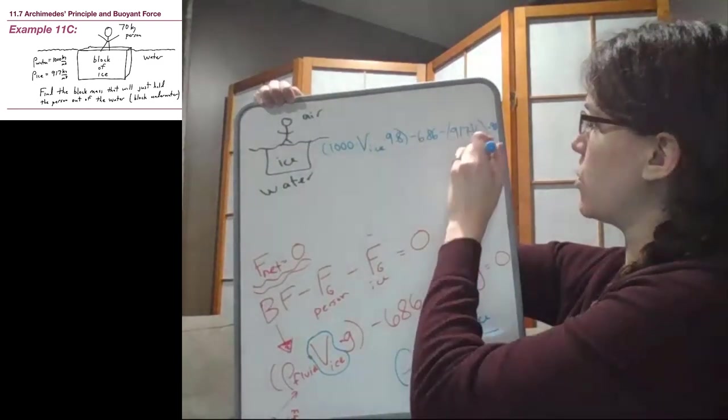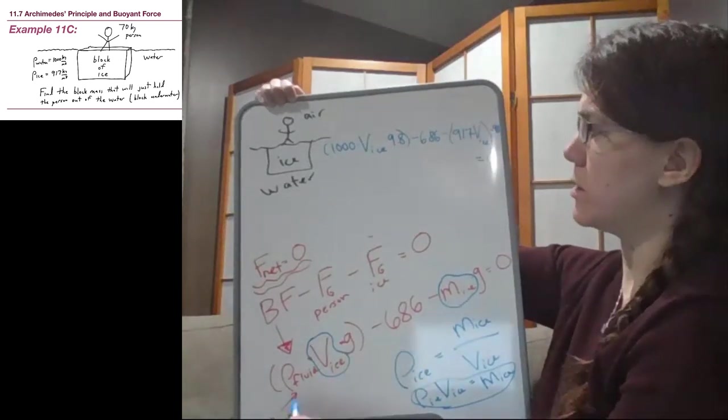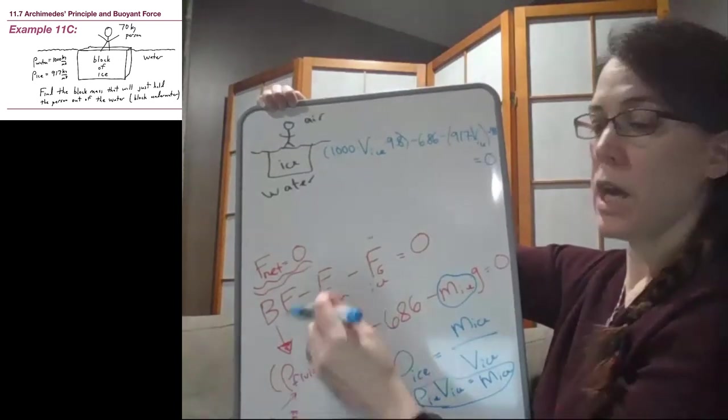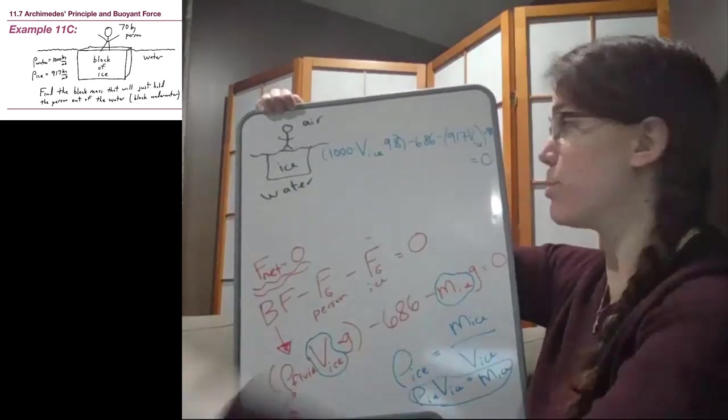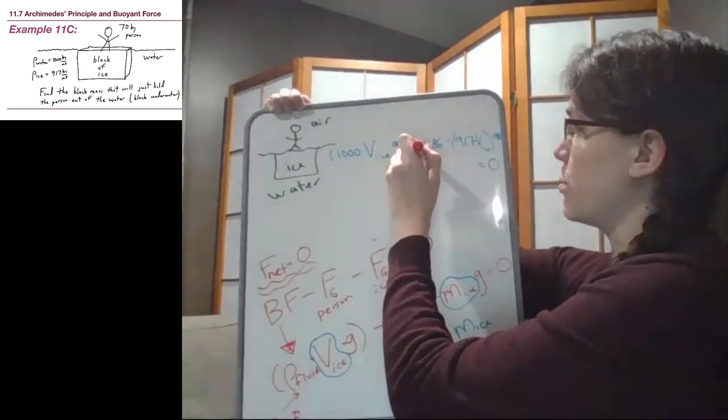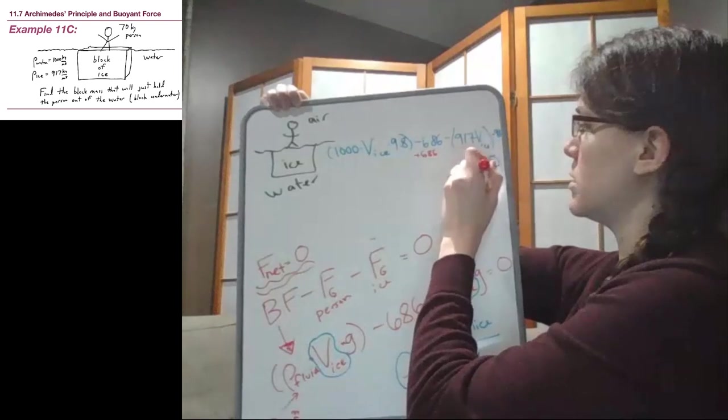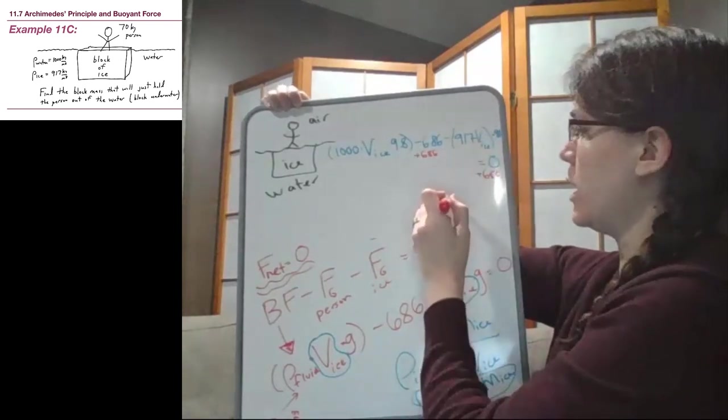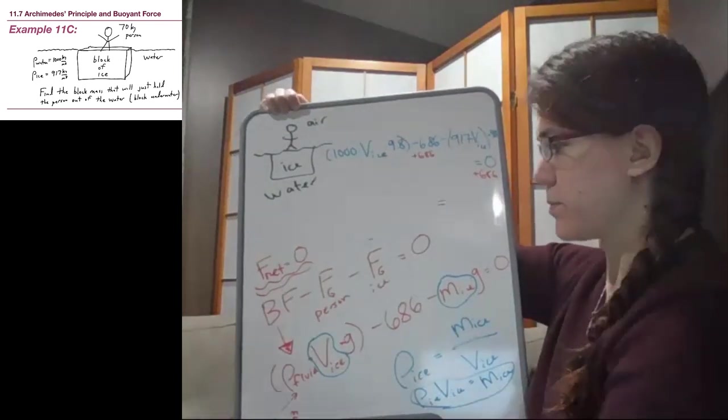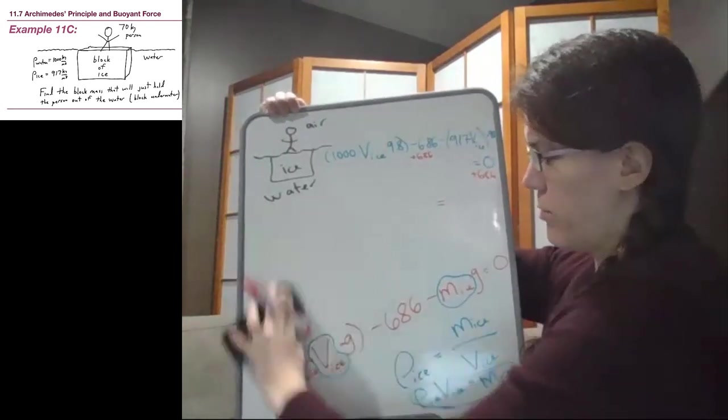So super tiny in the corner, but I'm going to rewrite it again here, kind of cleaned up a bit. I'm going to add 686 to both sides, so plus 686, plus 686.